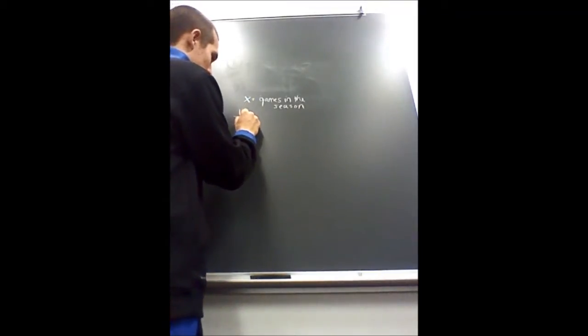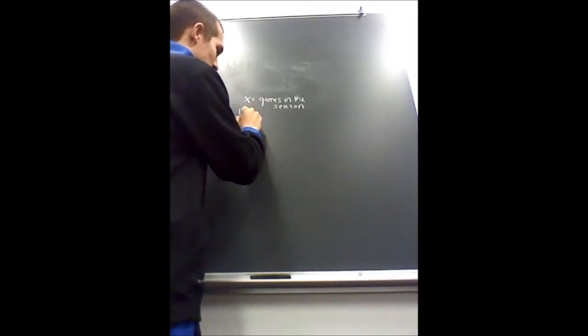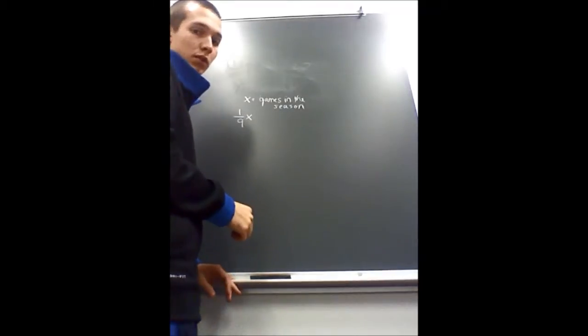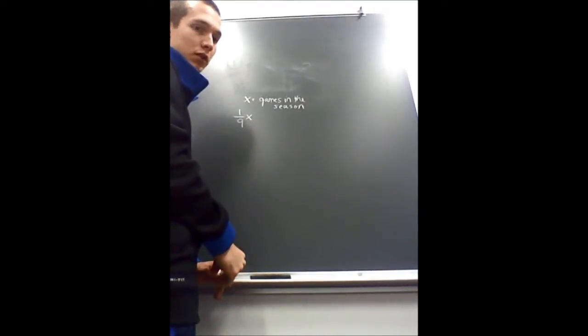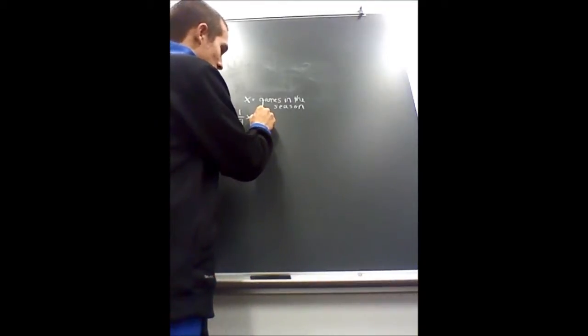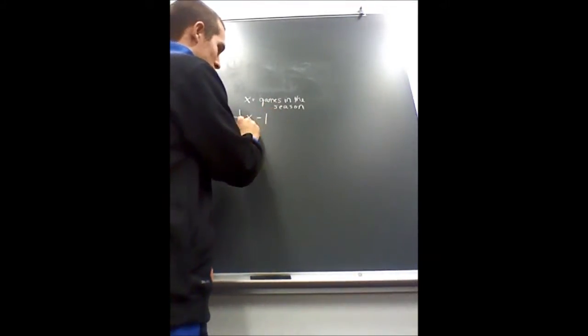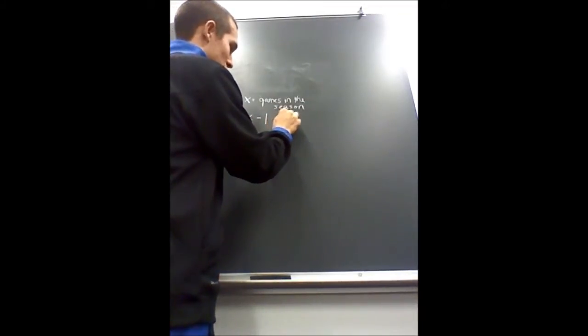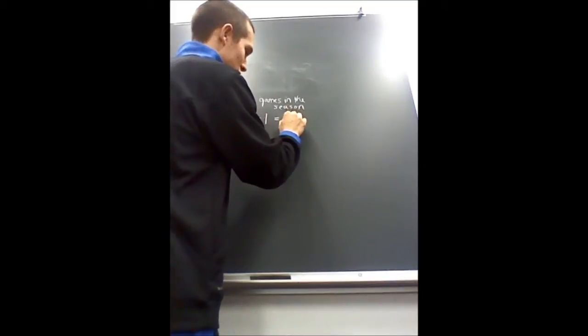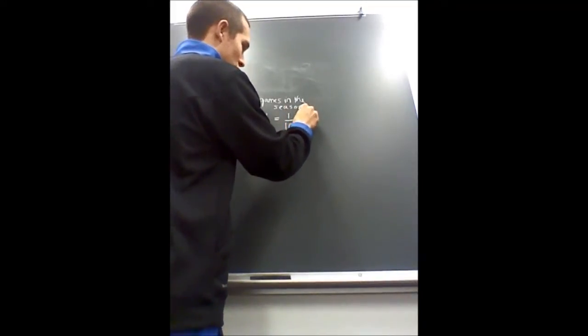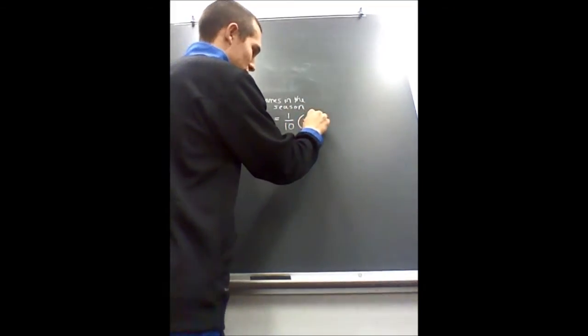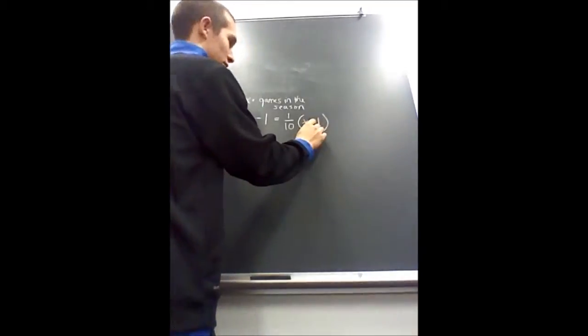So you know that one-ninth X is the total amount of games because they won one-ninth of their games. But they didn't play the last game yet. So if you take the total amount of games minus the game they didn't play yet, that would equal one-tenth of the games minus one, because they didn't play it yet.